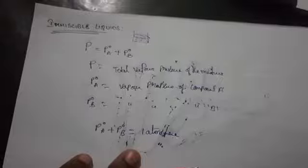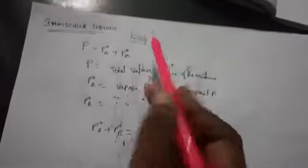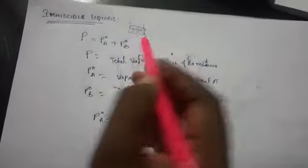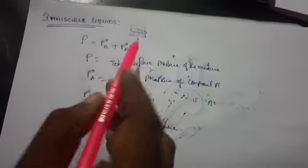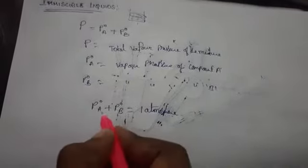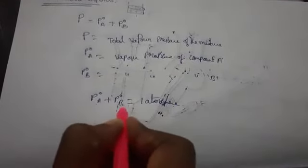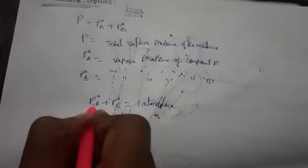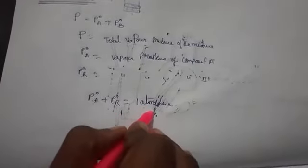When you combine these two liquids, the total pressure becomes equal to atmospheric pressure at a temperature which is lower than the boiling point of either individual liquid. The vapor pressure of A and the vapor pressure of B together give a sum equal to one atmospheric pressure at a very low boiling point.